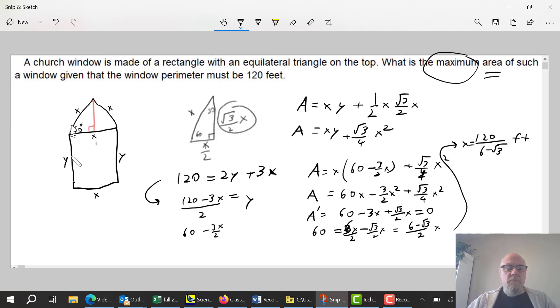I know that this distance has to be 120 all over 6 minus root 3. I need to know the area. Here's area with X and Y, but here's the area formula. I'm going to use this formula where I just have to plug the X in to get the area. So I'm going to take this value for X and plug it into this formula and calculate so many feet squared.